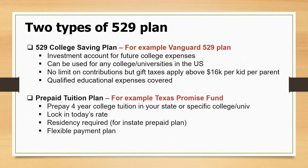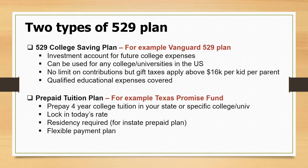The second type of 529 is the prepaid tuition plan — in Texas it's the Texas Promise Fund, where you prepay four-year college tuition in your state and lock in today's rate. So that $16,000 UT Dallas figure — you can lock in today's rate even if your kid is going to college in 10 years. You have to be a Texas resident. Payment is very flexible: it could be like a car payment, yearly payment, or lump sum.